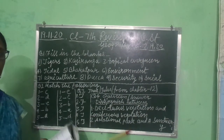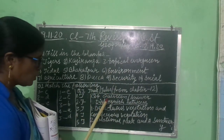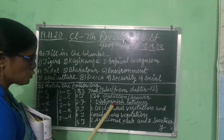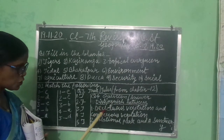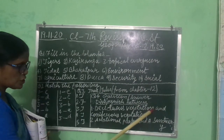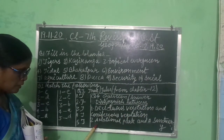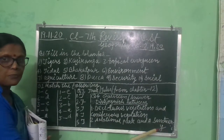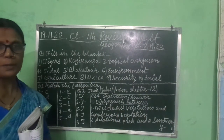Now we are going to question number four. We will do distinguish between. First: distinguish between deciduous vegetation and carnivorous vegetation. Second: distinguish between national park and sanctuary. You will write the differences and send them to my personal WhatsApp number.